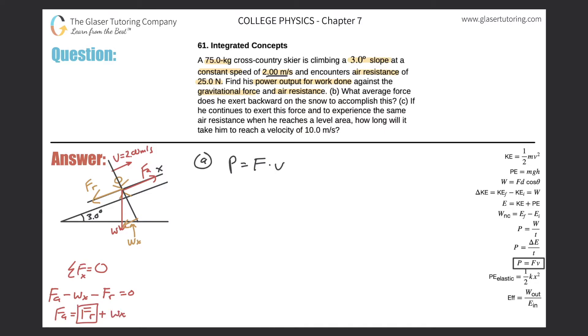So the wind resistance, they told us, was 25 newtons. So I know that piece. But what would be the weight in the x direction? Well, remember, go back to the triangle here, guys. What's the angle in here? What's this angle?